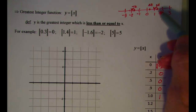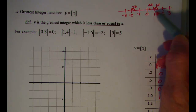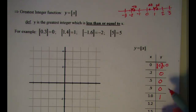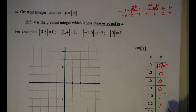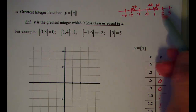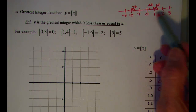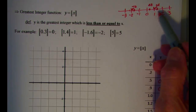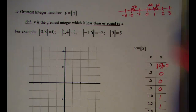1.2 is between 1 and 2, so the greatest integer of 1.2 is 1. Likewise with 1.5 — that's between 1 and 2 — so the greatest integer of 1.5 is 1.